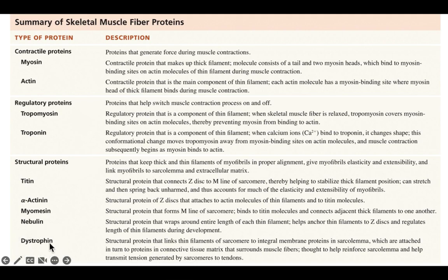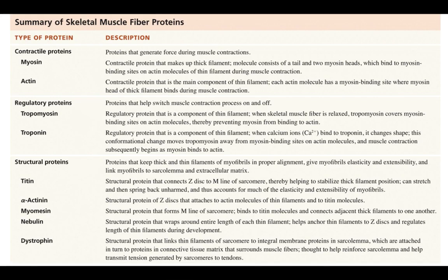Muscular dystrophy is a genetic defect in this protein called dystrophin. Basically, this protein is used to attach the muscle cells to the connective tissue — it holds those muscle cells to the connective tissue of the tendons. So if it's defective, the muscle can actually separate from the tendons, and that can cause this muscular problem. This is just a summary of proteins that are very important for muscle contraction.